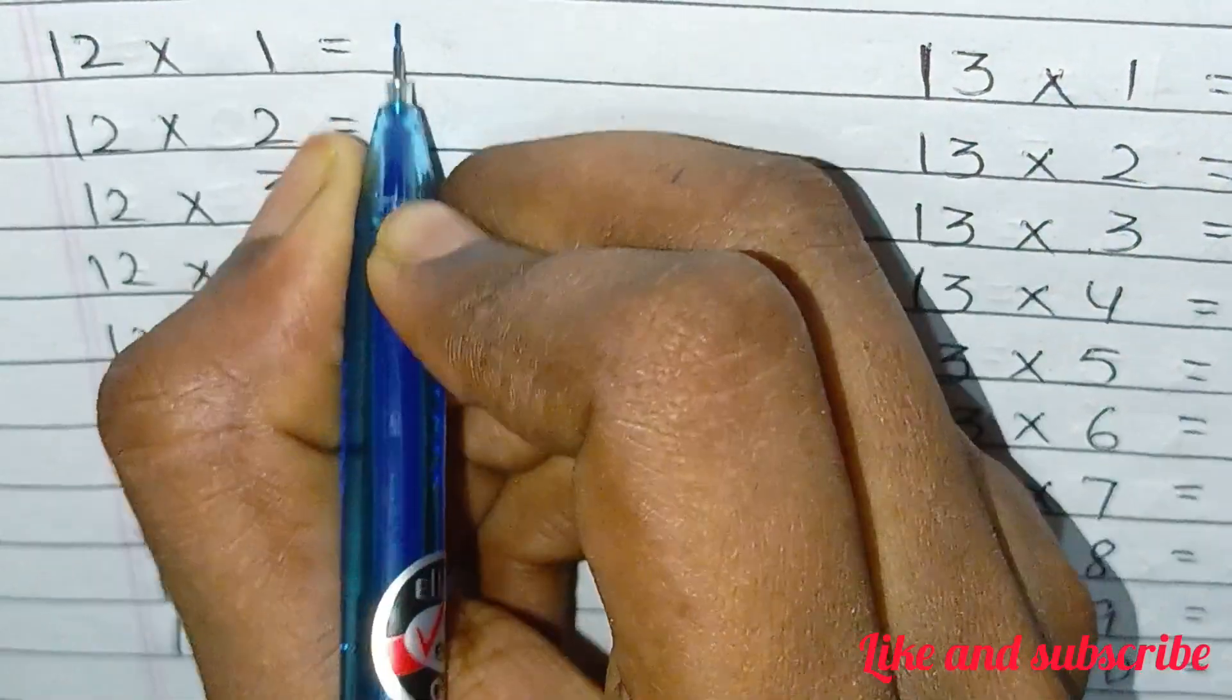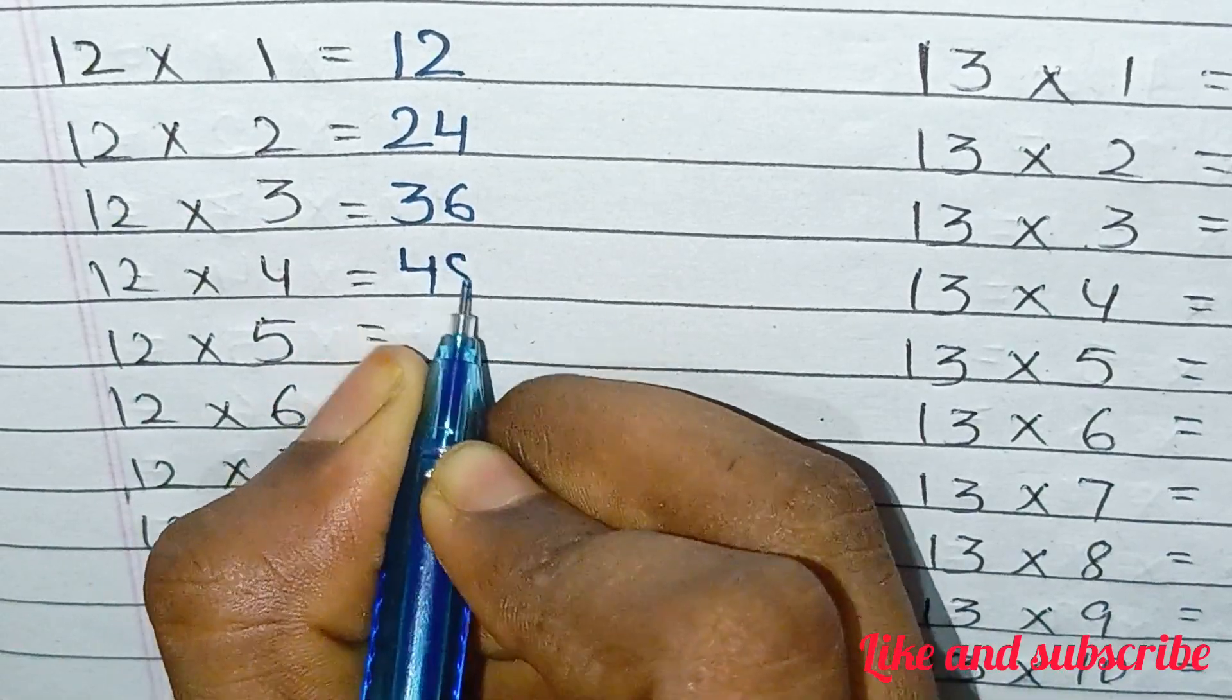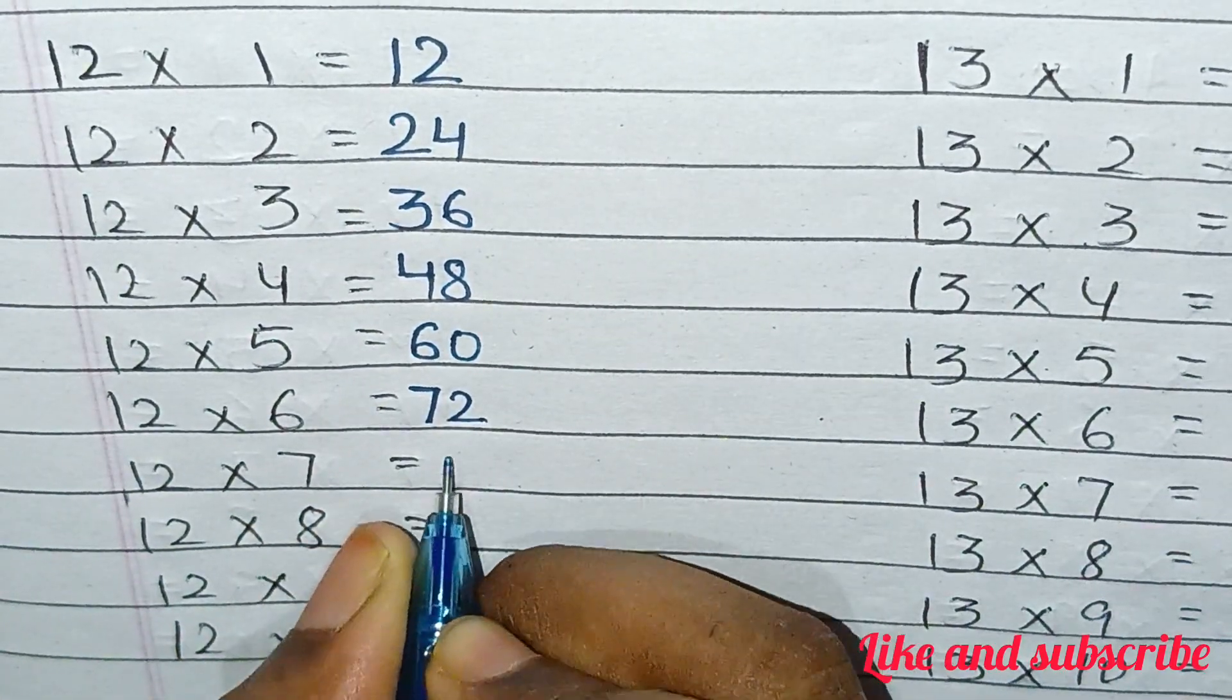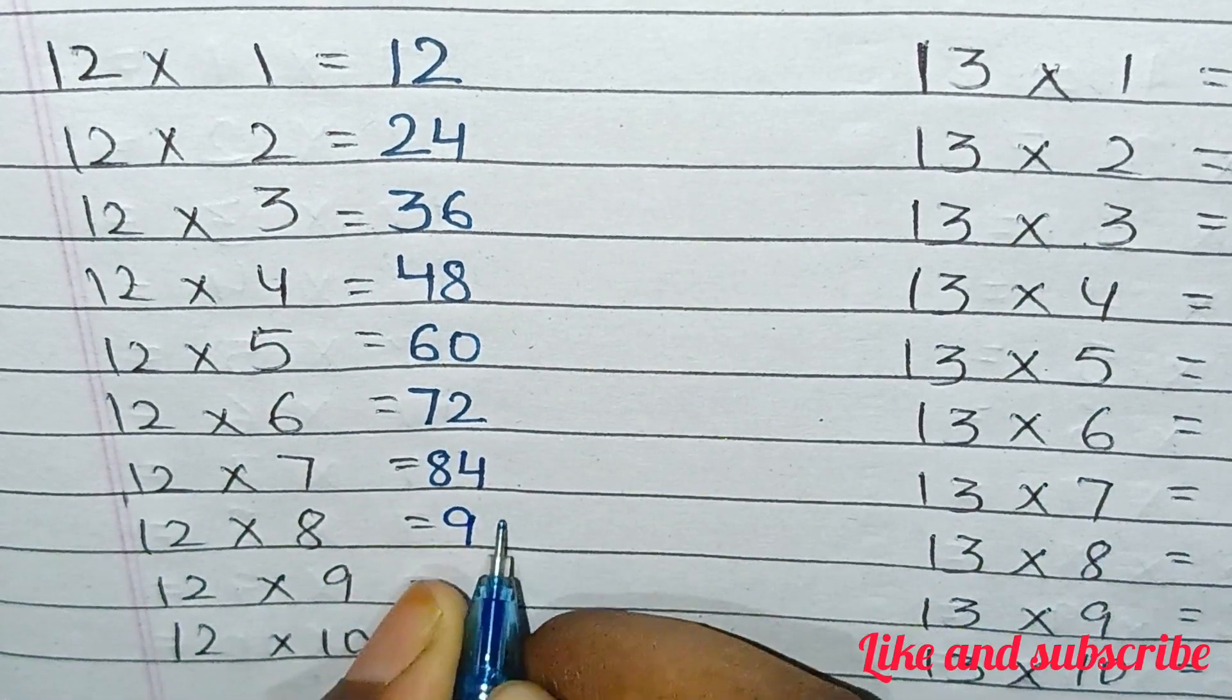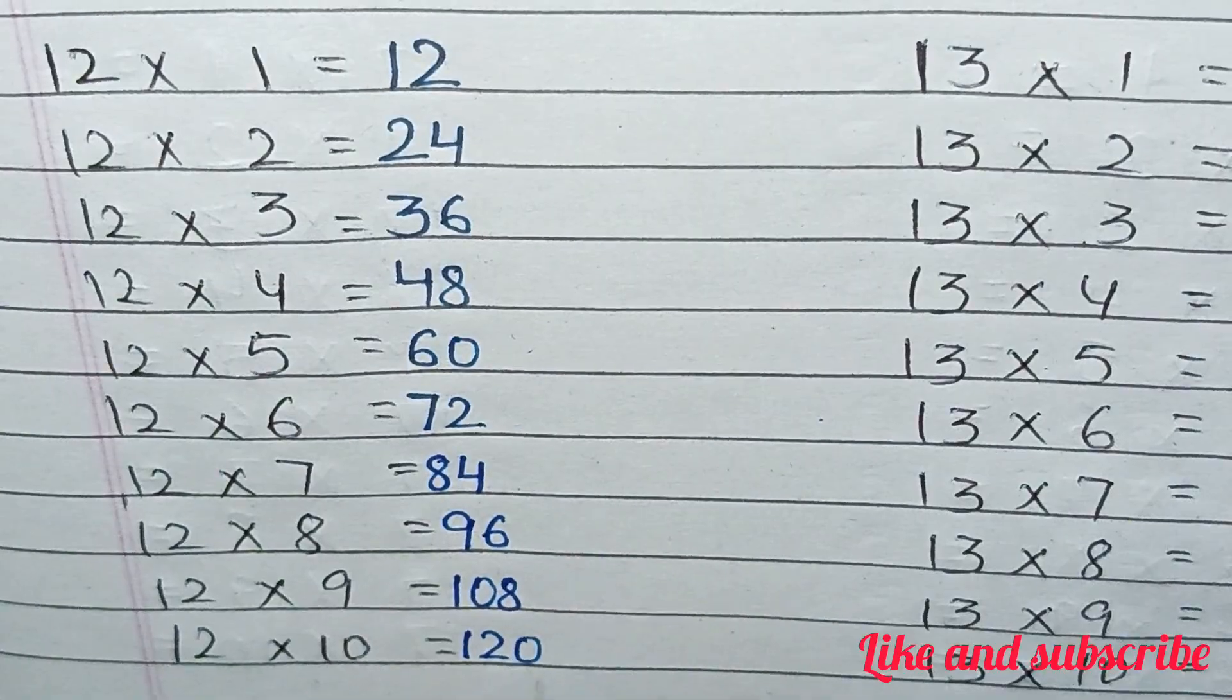12×1=12, 12×2=24, 12×3=36, 12×4=48, 12×5=60, 12×6=72, 12×7=84, 12×8=96, 12×9=108, 12×10=120.